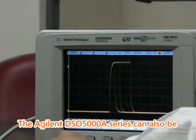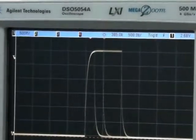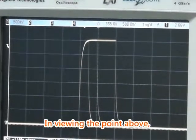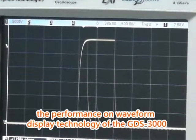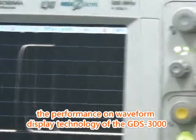The Agilent DS-05000A series can also be adjusted on the display of waveform intensity and displays different levels of luminance on waveform. The performance on waveform display technology of the GDS-3000 is comparable to the DS-05000A.